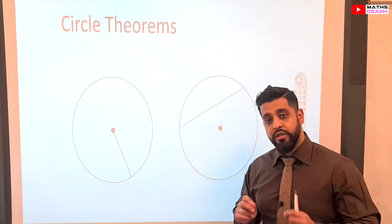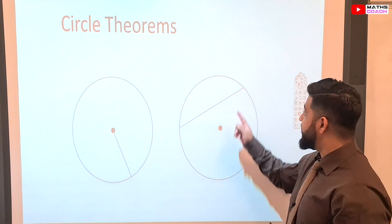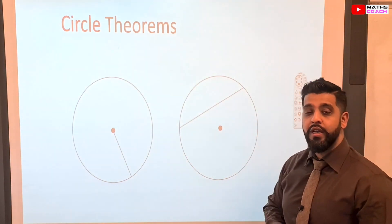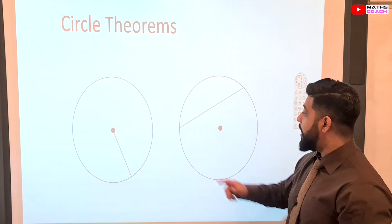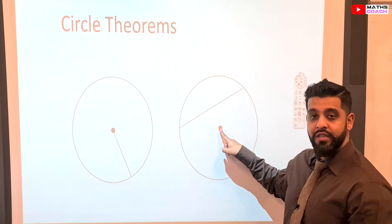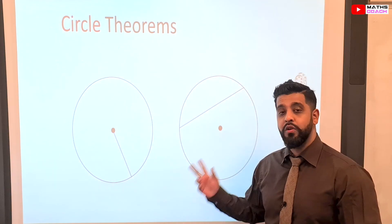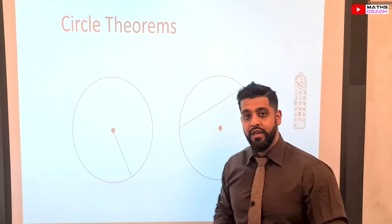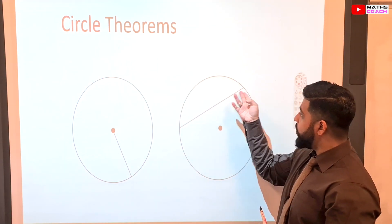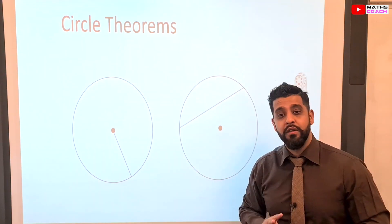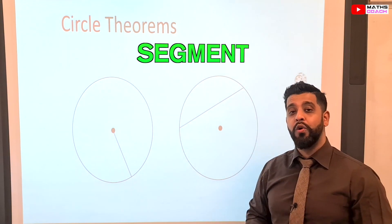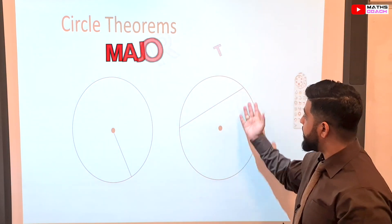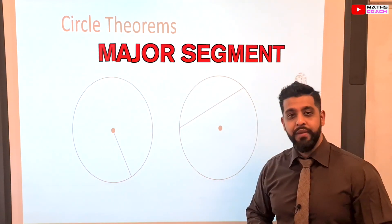What some students often get confused with is a chord. A chord also touches one end of the circle and meets at the other end of the circumference, but it doesn't go through the center — that's why it's called a chord and not a diameter. A diameter has to go through the center of a circle. Now a chord splits up a circle into two parts, which we call segments. This is known as a minor segment, the smaller one, and this is known as a major segment.